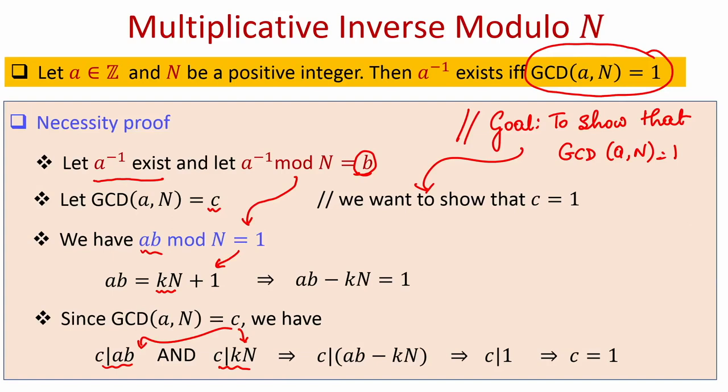That brings us to the end of this lecture. To summarize: we saw that the GCD of any two numbers A and B can be expressed as a linear combination of the numbers themselves; we know how to find those integer linear combiners using extended Euclid's algorithm; and we discussed the definition of multiplicative inverse modulo n and the condition under which it exists. Thank you.